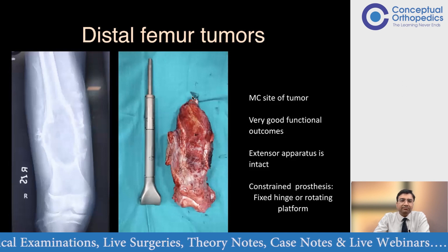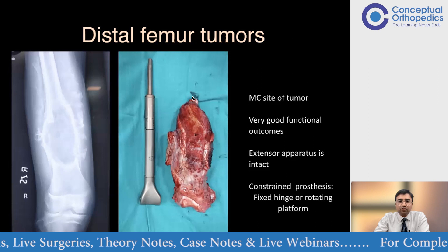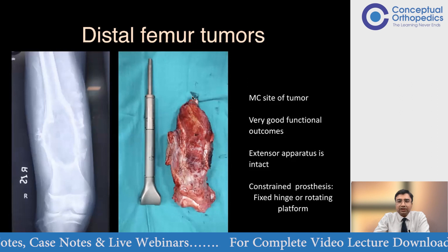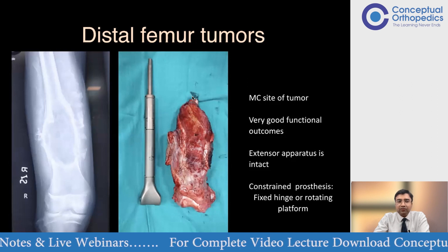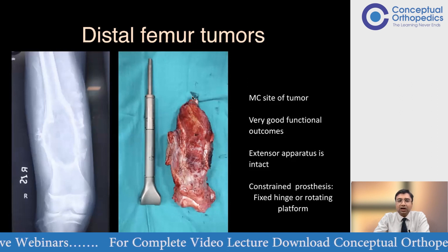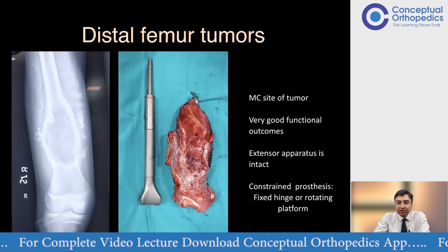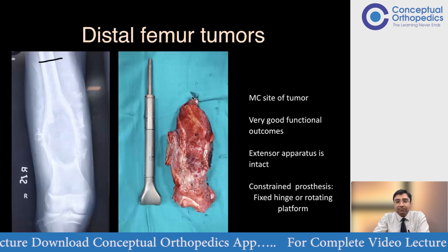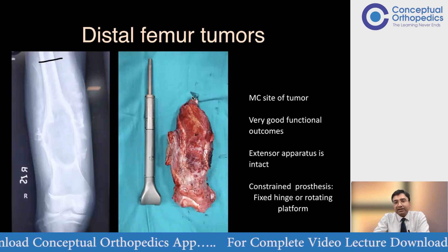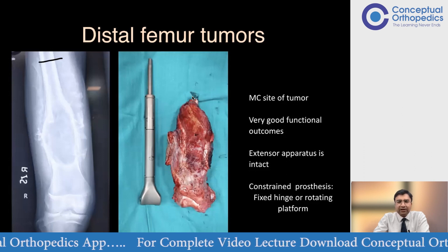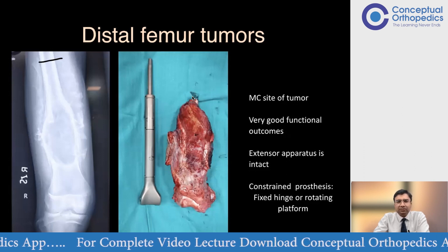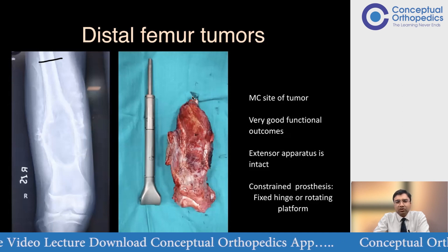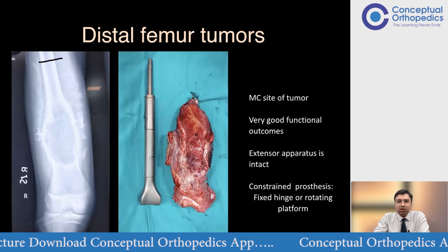There are certain functional outcomes associated especially with distal femur, which technically affects our outcomes. It is an advantage over proximal tibia — when we dissect a tumor in distal femur, our extensor apparatus is intact. There are different types of implants — constrained implants and modular implants — and we are going to discuss all those things today.